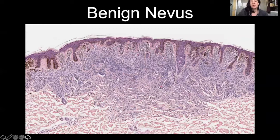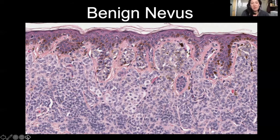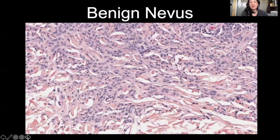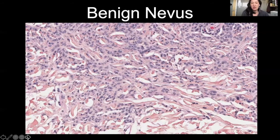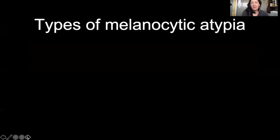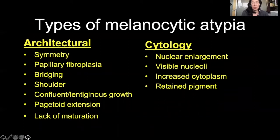Before we talk about different types of atypia and rating atypia, let's talk about what is a typical nevus. This is an example of a nice congenital benign nevus, showing a symmetric wedge-shaped appearance. Looking closer at the epidermis, we've got some nests at the tips of the rete ridges, not a lot of bridging, and the melanocytes in the superficial portion appear plump and nested. As we go deep into the dermis, they disperse between the collagen bundles, showing the melanocytes are indeed getting smaller — a sign of good maturation and dispersion with depth. We can rate atypia in melanocytes based on architectural features or cytology.